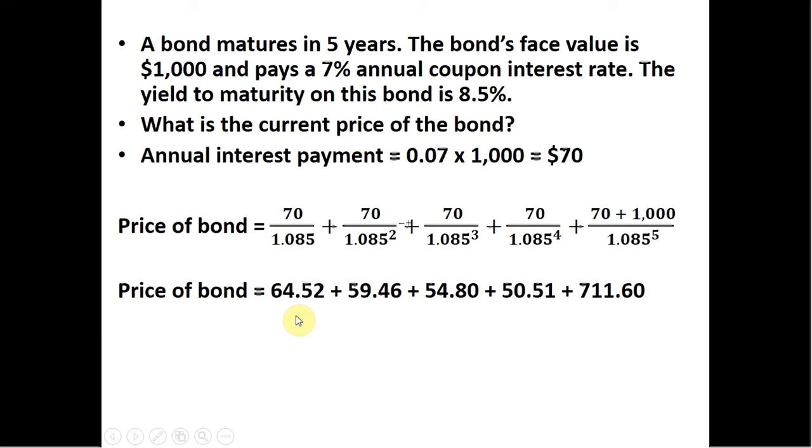Okay, so 70 divided by 1.085 is 64.52 and so on. I'm showing you each of those calculations. Summing that up, the current price of the bond is $940.89.